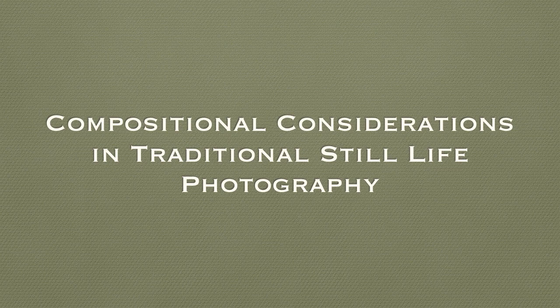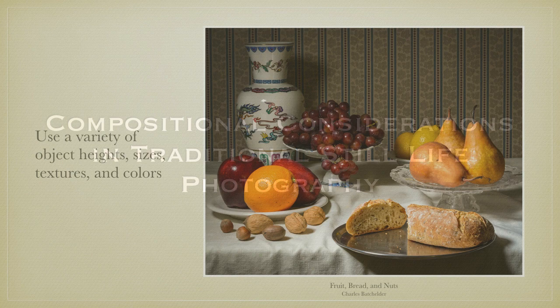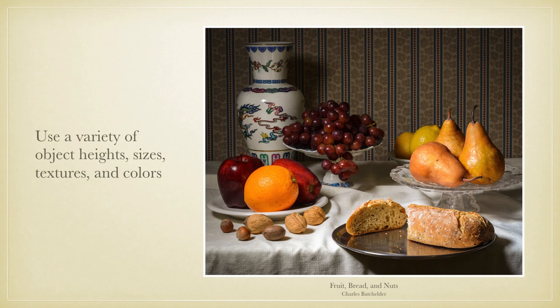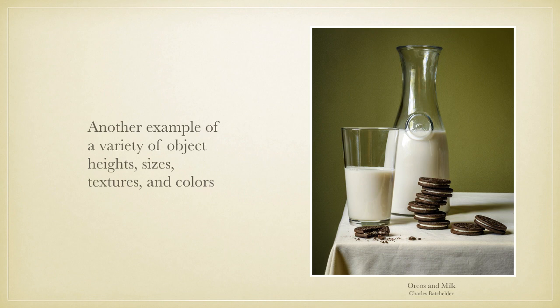Now that we know what kind of image we're trying to create, we can begin to consider how to arrange objects to create a well-composed image. Arrangement and composition is really the essence of traditional still life photography. When composing a traditional still life, use a variety of object heights, sizes, textures, and colors. This photograph has objects that vary in size and height from the small nuts to the large vase. Textures range from the smooth hardness of porcelain, glass, and metal, to the rougher hardness of the nuts, to the softer textures of the fruit, the loaf of bread, and the folds of the tablecloth. There are also a variety of colors from a warm tonal palette of red, yellow, orange, and brown.